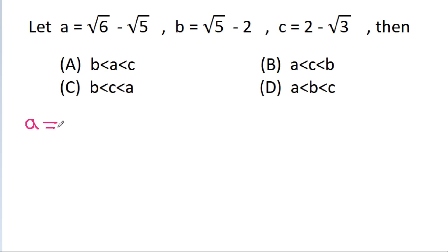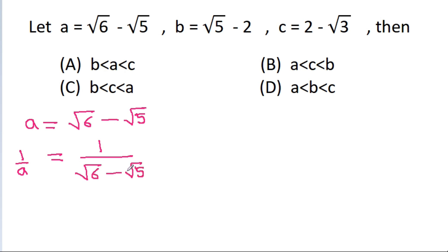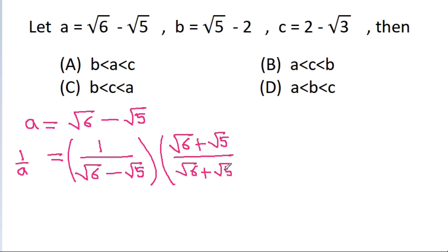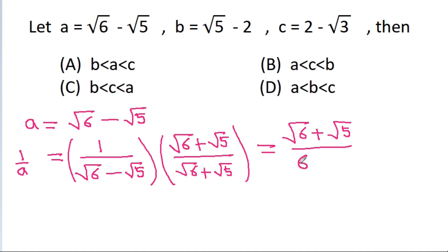We have a is equal to root 6 minus root 5. So 1 by a will be equal to 1 by (root 6 minus root 5). If we multiply it with (root 6 plus root 5) by (root 6 plus root 5), then it will be equal to (root 6 plus root 5) divided by (a minus b)(a plus b), which is a square minus b square. So root 6 squared is 6, minus root 5 squared is 5, giving 1. So 1 by a equals root 6 plus root 5.